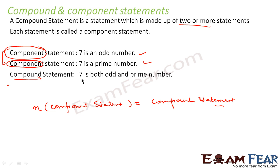That compound statement is: '7 is both odd and prime number.' This statement consists of two component statements — that is, '7 is an odd number' and '7 is a prime number.' So what we have learnt is, a compound statement is nothing but a statement which is made up of two or more statements, and each statement is called a component statement. Combining these two, we make the compound statement '7 is both odd and prime number.'